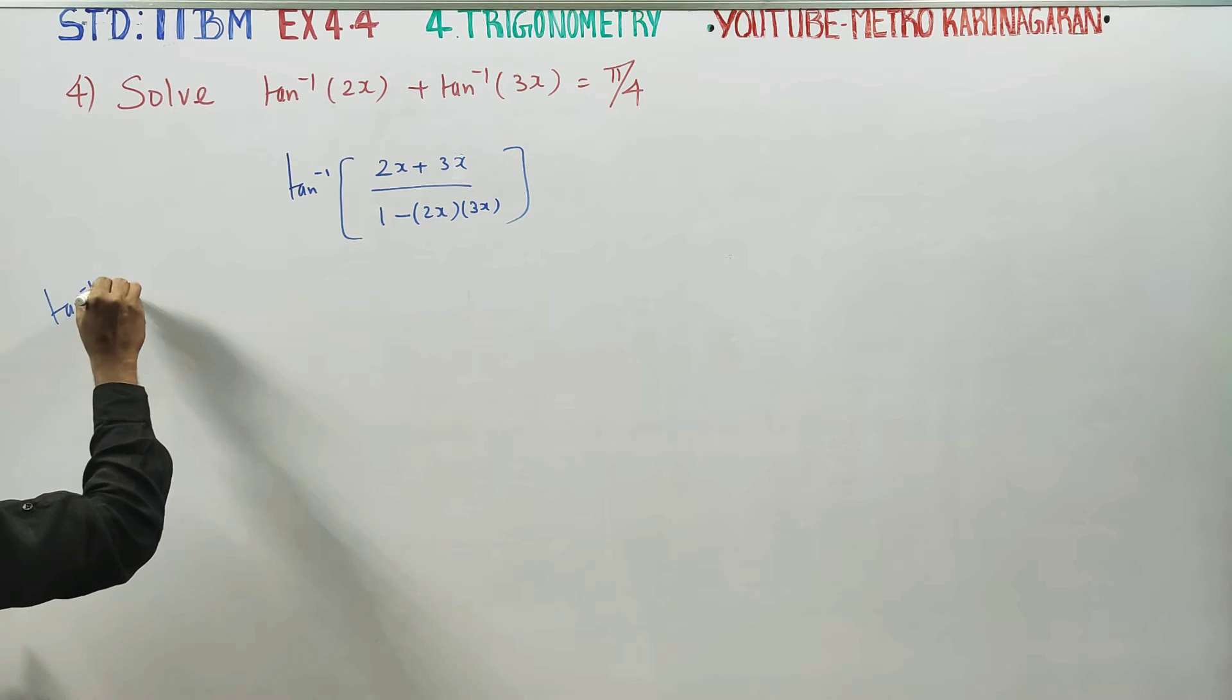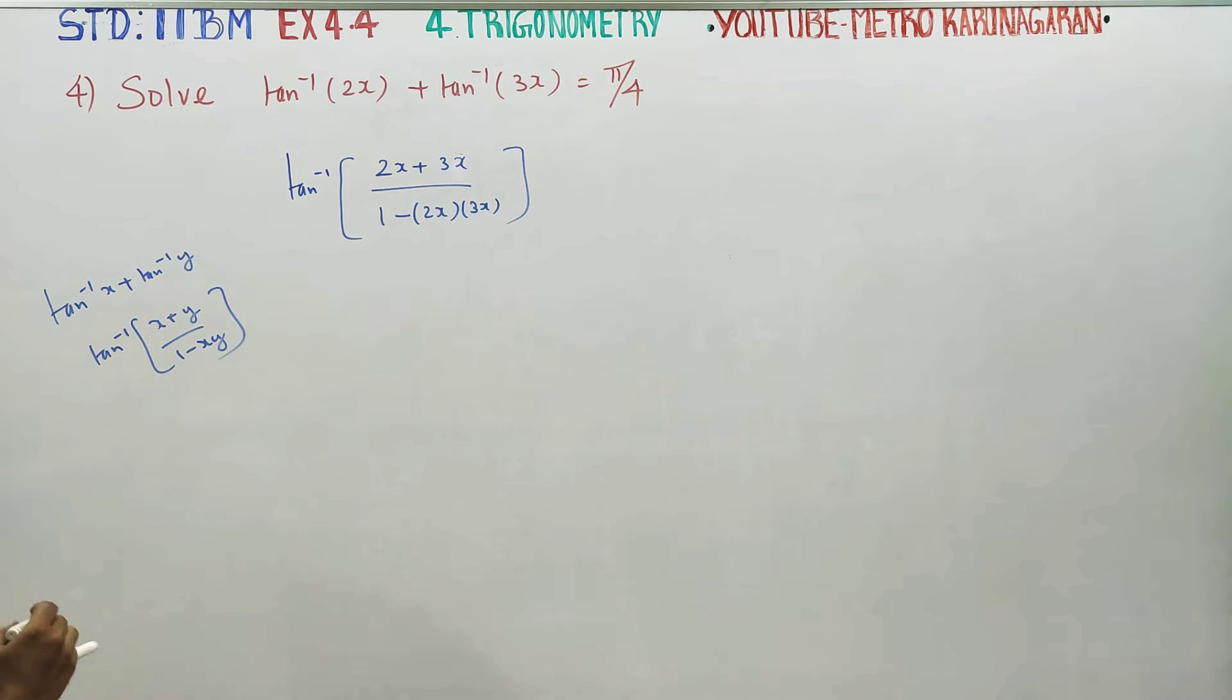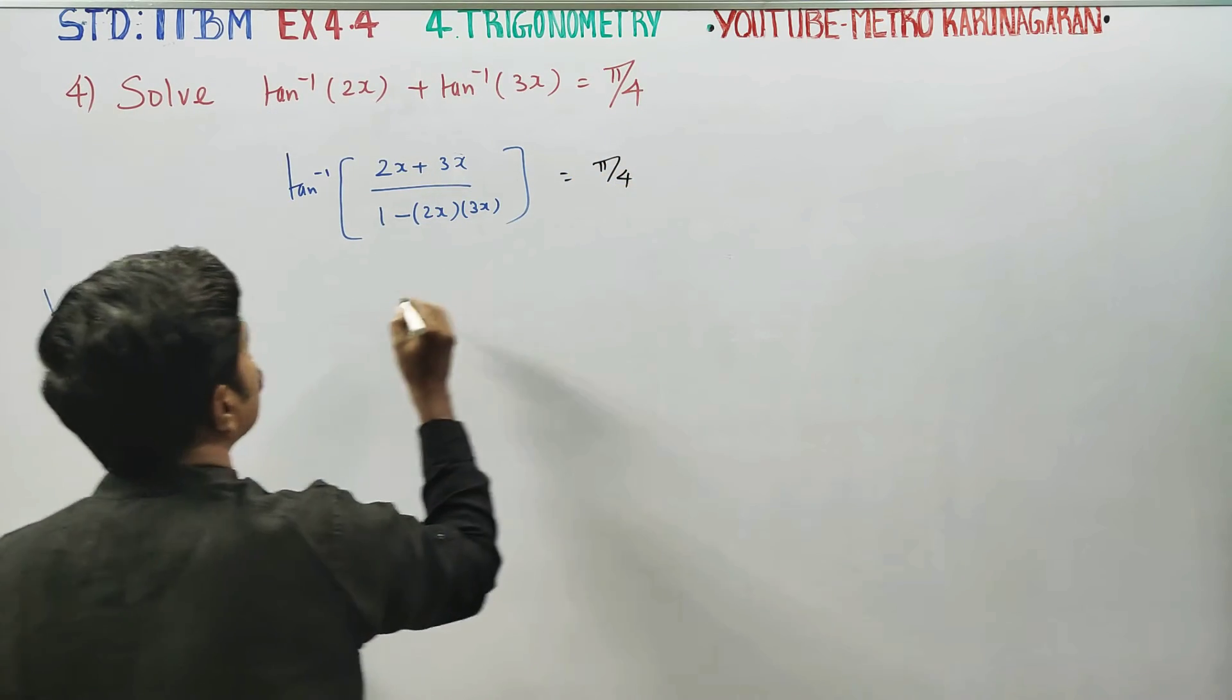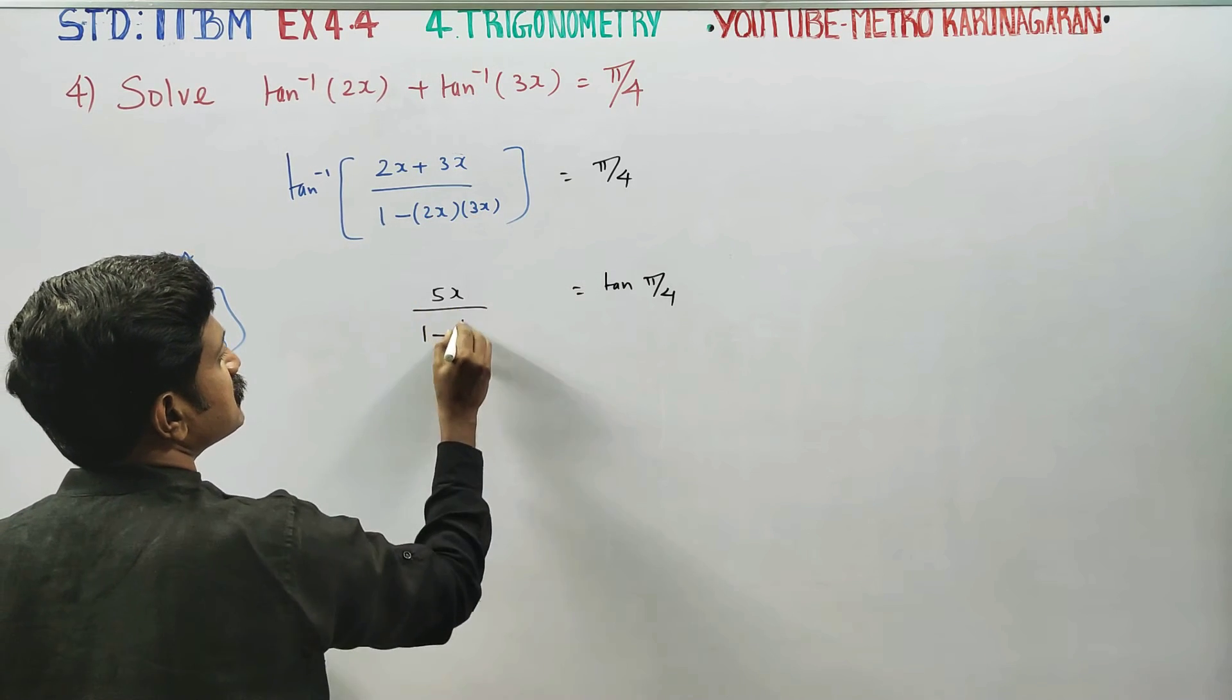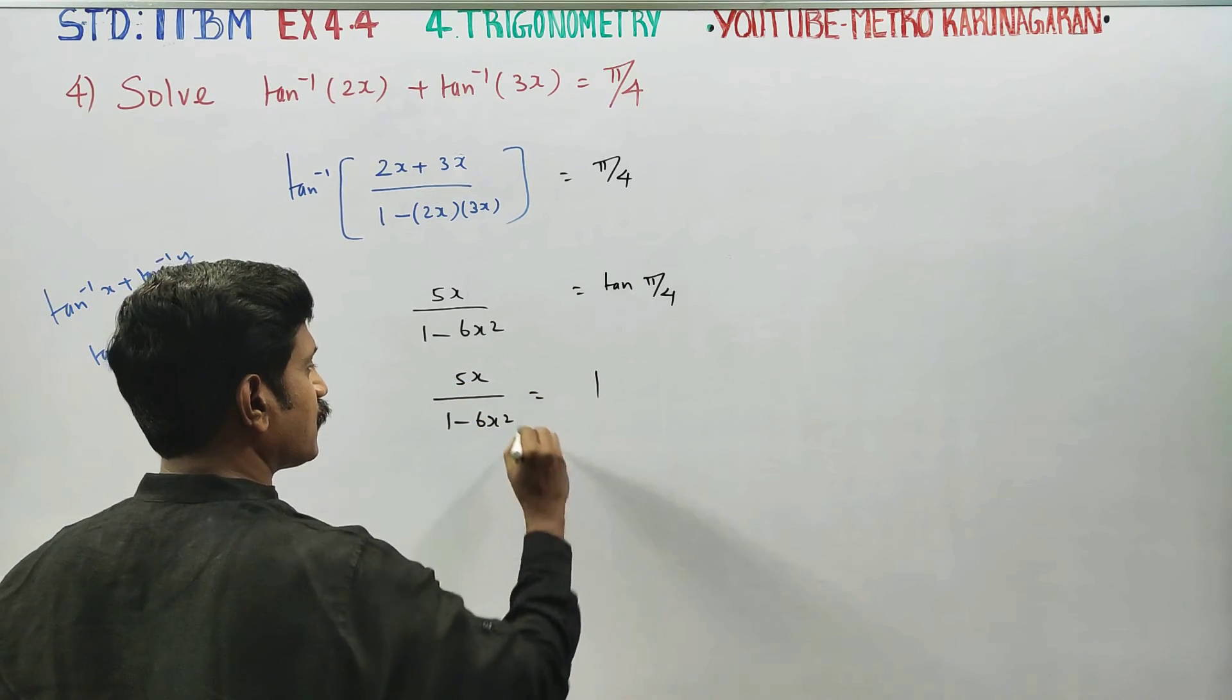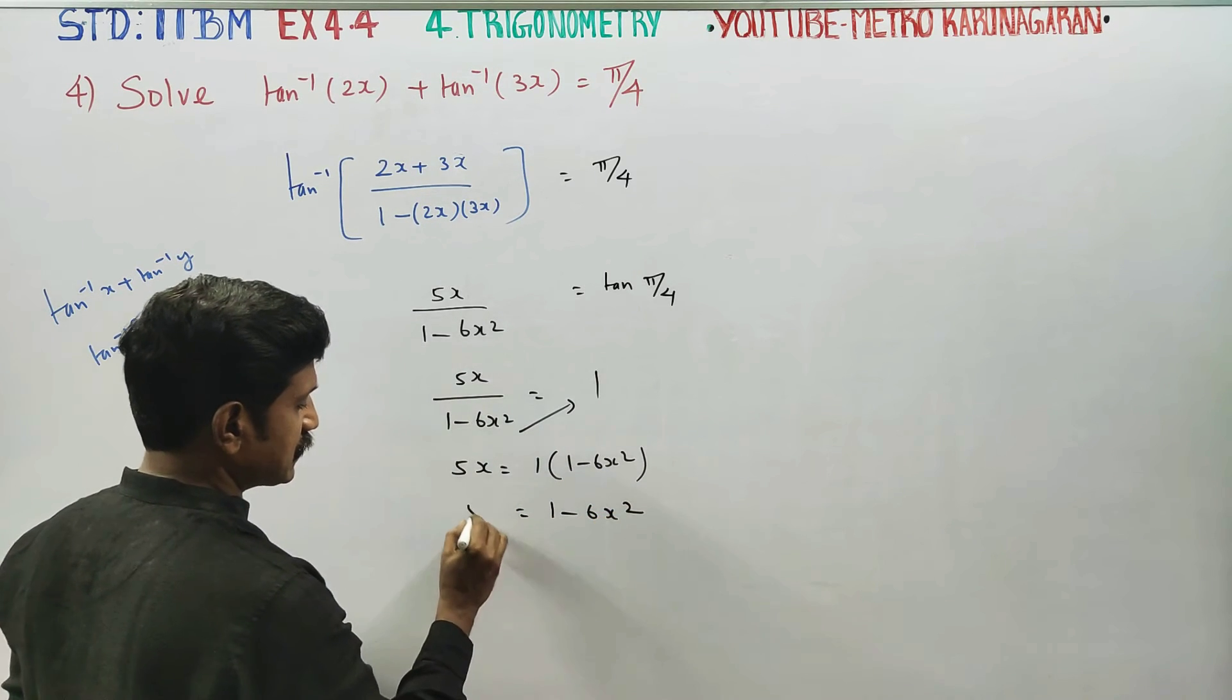If you recall, substituting we get 2x plus 3x divided by 1 minus 2x times 3x equals pi by 4. So 5x divided by 1 minus 6x squared equals tan 45 which is 1. Cross multiplying, 5x equals 1 times 1 minus 6x squared, so 1 minus 6x squared equals 5x.